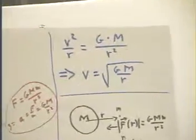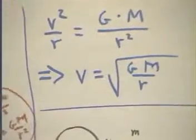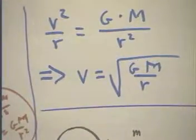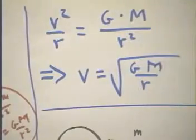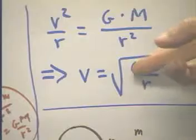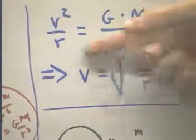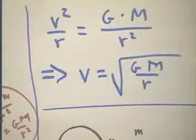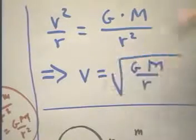We easily solve this equation. Here it is again. We multiply both sides by R, getting big G, big M over little r, and then we take the square root, getting this expression. And this is the velocity of our orbit.